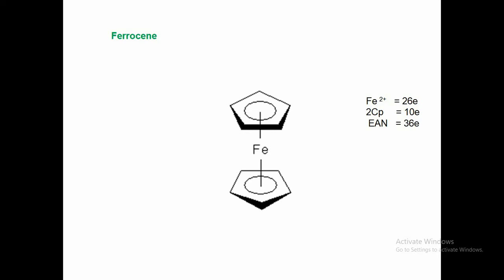The ion is Fe2+, having 26 electrons. Two cyclopentadienyl rings, each donating 5 electrons, give a total of 10 electrons. The total effective atomic number is 36 electrons, which attains the nearest noble gas configuration, so it is more stable. It is stable in both crystalline and gaseous form.